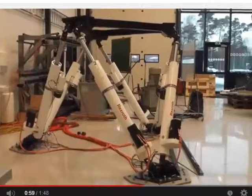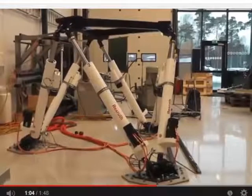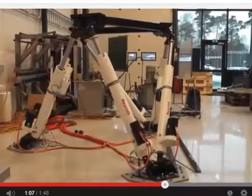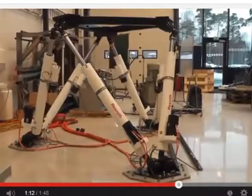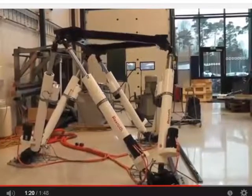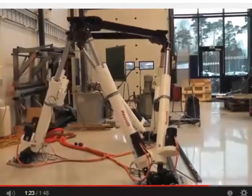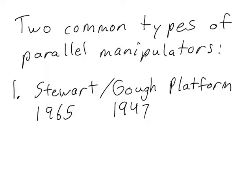There are six prismatic joints placed in parallel. We can tell that this is a parallel mechanism because each of these prismatic joints is attached both to the ground and to the end effector. The Stewart or Goff platform is defined by having all of its actuated joints be prismatic joints.